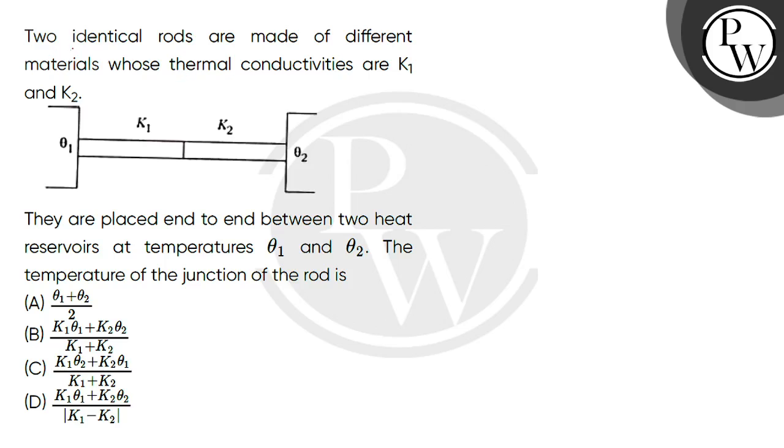Hello, let's read the question. Two identical rods are made of different materials whose thermal conductivities are K1 and K2. They are placed end to end between two heat reservoirs at temperatures Theta1 and Theta2. The temperature of the junction of the rod is.